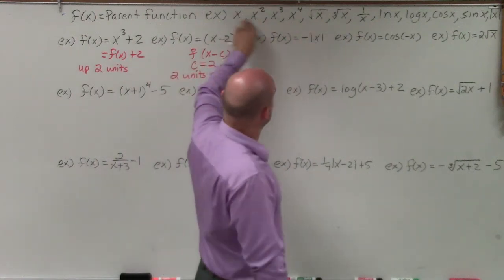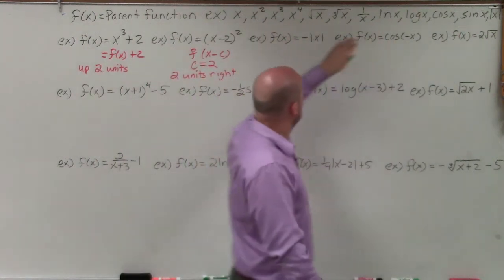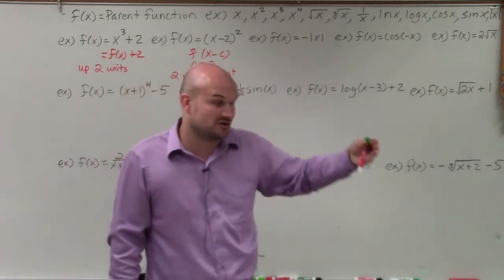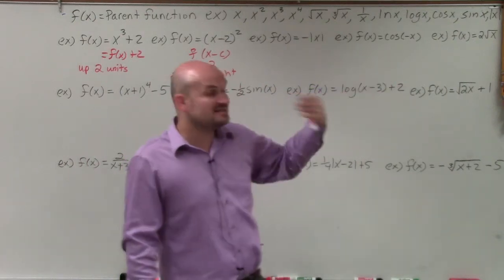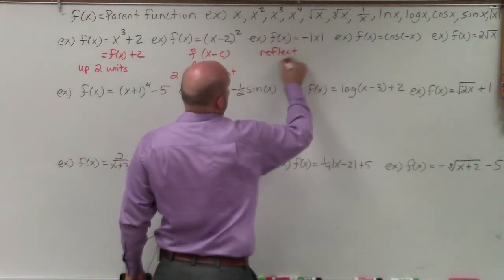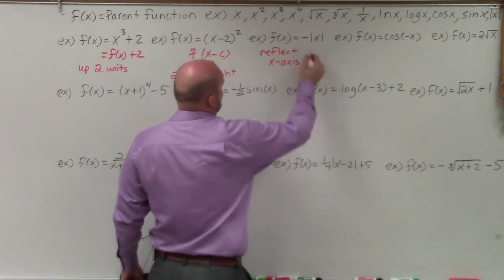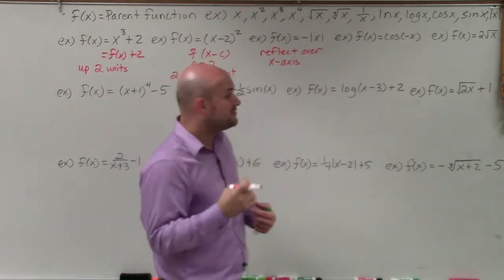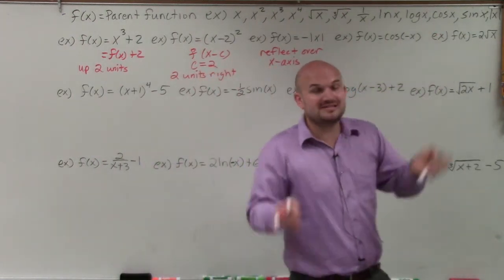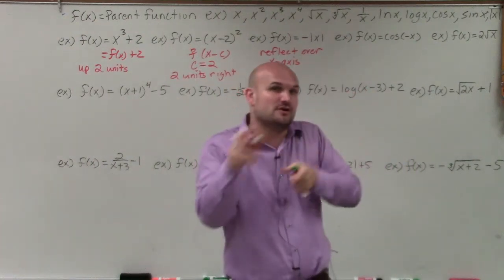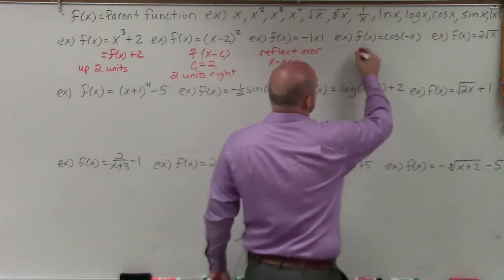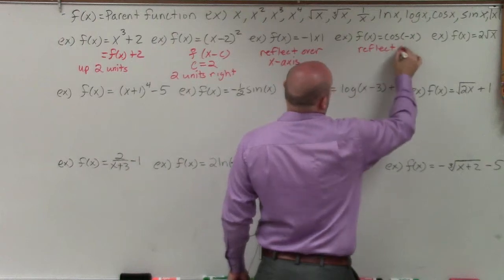Now I have the absolute value of x being multiplied by a negative outside the function. Since it's being multiplied outside, that's a reflection over the x-axis. Next, I have cosine of negative x. My parent function is cosine of x, and the negative is being multiplied on the inside — it's cosine of negative 1 times x — so that's a reflection over the y-axis.